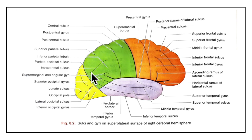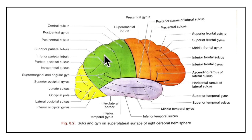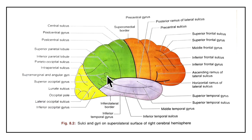In detail: the post-central sulcus runs parallel to the central sulcus, a little behind it. The post-central gyrus lies between these two sulci. The area behind the post-central gyrus is divided into superior parietal lobule and inferior parietal lobule by the intra-parietal sulcus. Looking at the inferior parietal lobule, the upturned ends of the posterior ramus of the lateral sulcus, the superior temporal sulcus and the inferior temporal sulcus invade into the inferior parietal lobule, dividing it into anterior, middle and posterior parts. The anterior part is called the supramarginal gyrus and the middle part is called the angular gyrus.